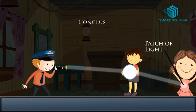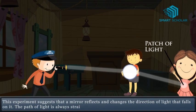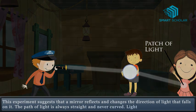We get down to the conclusion that this experiment suggests that a mirror changes the direction of the light that falls on it. The path of light is always straight and never curved. Light doesn't bend.